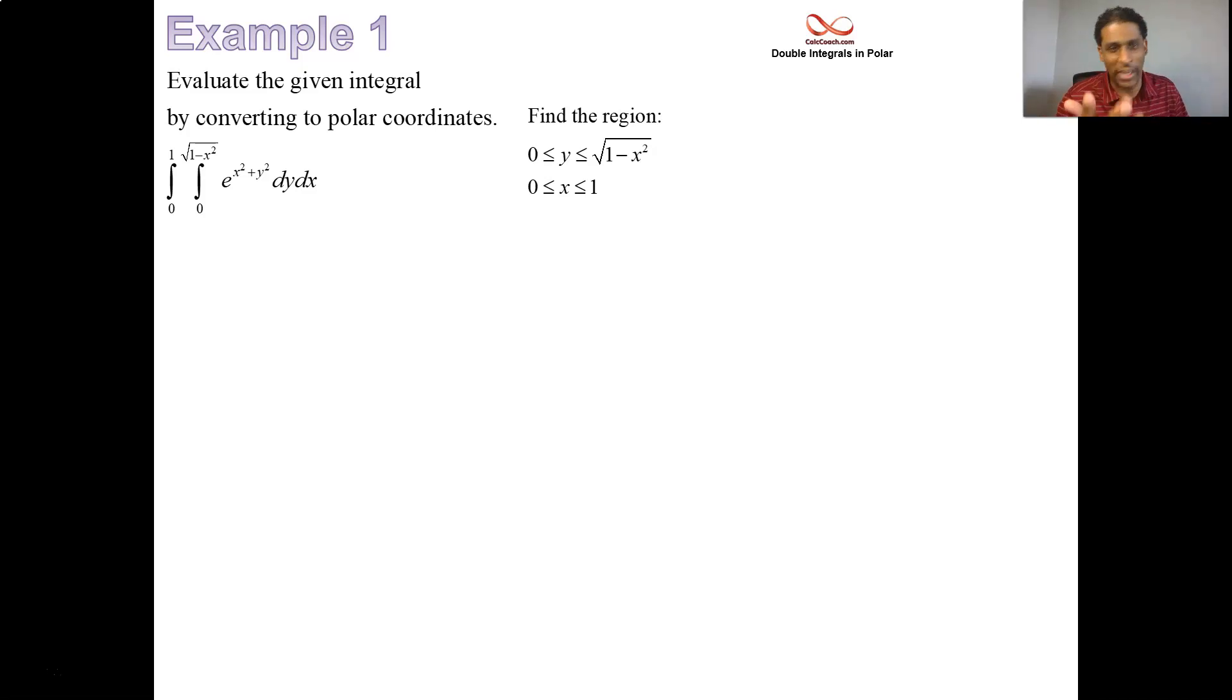We know what it is, but let's just make sure. If y equals the square root of 1 minus x squared, you square both sides, you move it over, it's the unit circle. Now, both the x's and the y's are positive, so it's only the upper half of the unit circle.